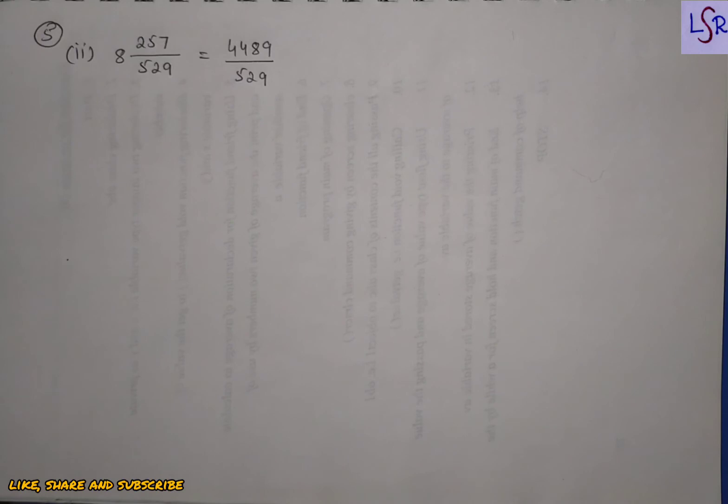Now let's see question number 5: find the square root of the following fractions by division method. We are given a fraction and have to find its square root using division method. For the second part: 8 whole 257/529. Converting to improper form gives 4489/529, and we find the square root of both numbers separately.